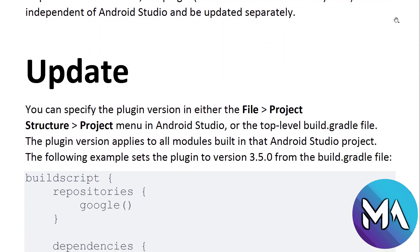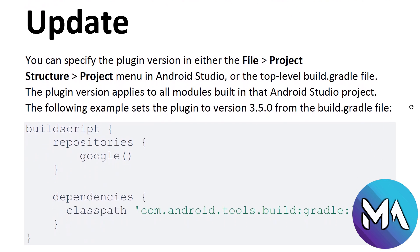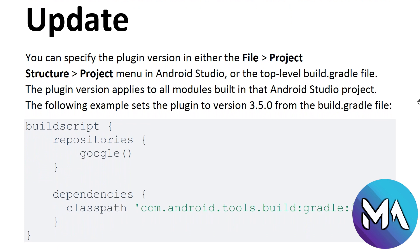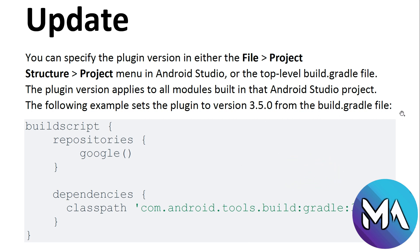Gradle is the base of Android which helps in using repositories, libraries, and other features included in Android. To update, you can specify the plugin version either in the project structure and project menu in Android Studio, or in the top-level Gradle file. The plugin version applies to all modules. In Android Studio, the following sets the plugin to version 3.5 in the Gradle file. This is the Gradle file and these are the dependencies — dependencies are for the libraries we are going to use in Android Studio.